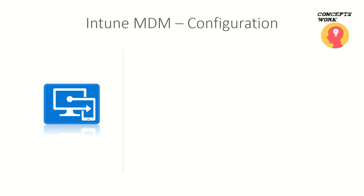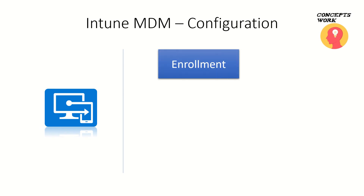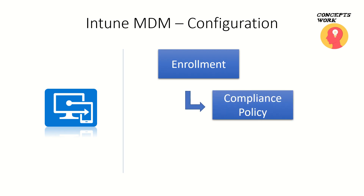Now let's talk about Intune MDM configuration and its three different phases. The first one is Enrollment — this is the section where you define settings such as what kind of platform is allowed and whether you are allowing personal devices to be enrolled or not. The next section is Compliance Policies — these are the set of settings based on which it is decided whether your device is compliant or not. Compliant means that as per the policies your enterprise defines, whether your device meets all those requirements.